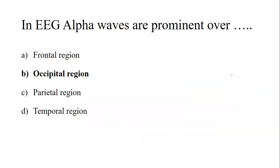The question was: EEG alpha waves are more prominent over which region? They are not prominent on the frontal region and not on the temporal region. They are prominent only on the occipital region. So the correct answer is option B — occipital region.